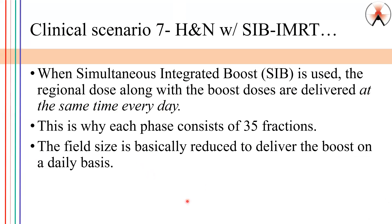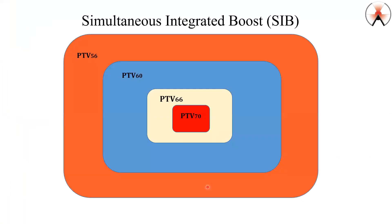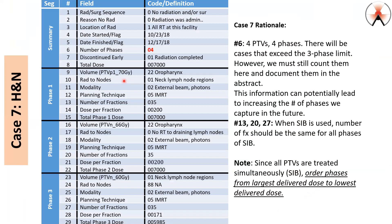Some of the characteristics of SIB: all the boosts are delivered at the same time every day. In this case, notice that all of them have 35 fractions and the field size is just being reduced as they move from one boost to the other — one PTV to the other. The highest dose is delivered to the smallest volume; the smallest dose is delivered to the largest volume. You're always going to boost your primary site, and then regional areas might get a different dose range. So in this case, this patient had four PTVs — that's four phases.